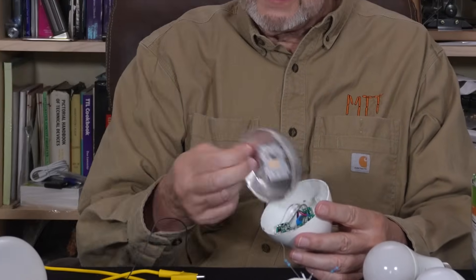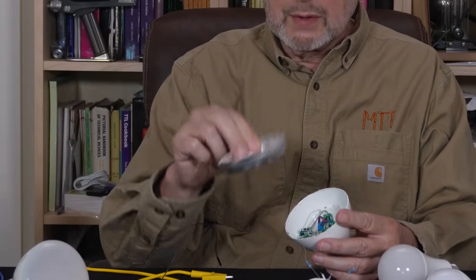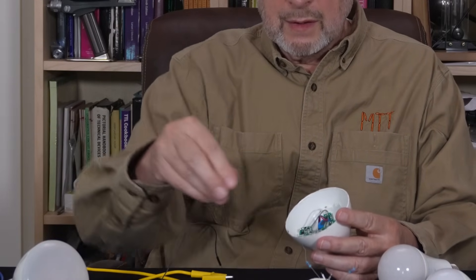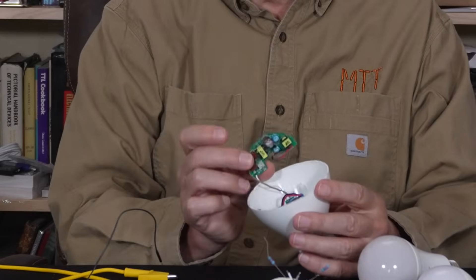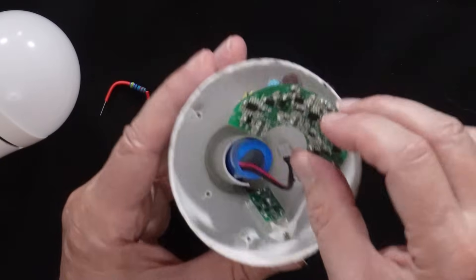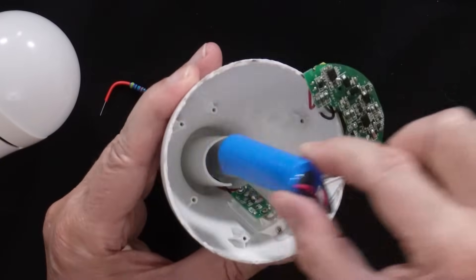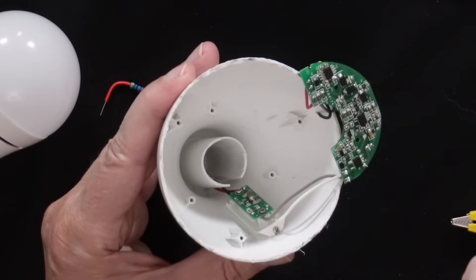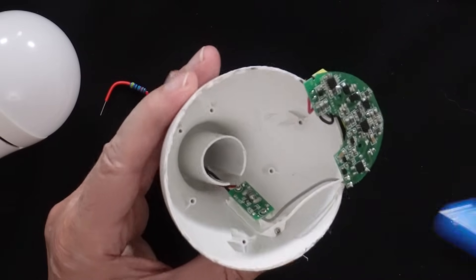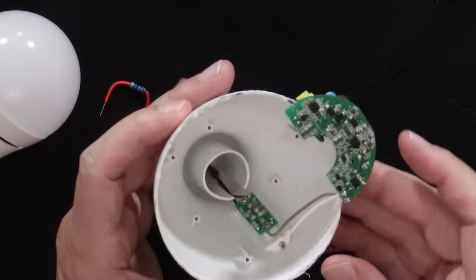This little tray gives it some heat sink capability, which is why it's in there. Then there's a little curved circuit board. This is the brains of the operation. And then of course, there's a lithium ion battery that runs everything. And that's what's inside of them.